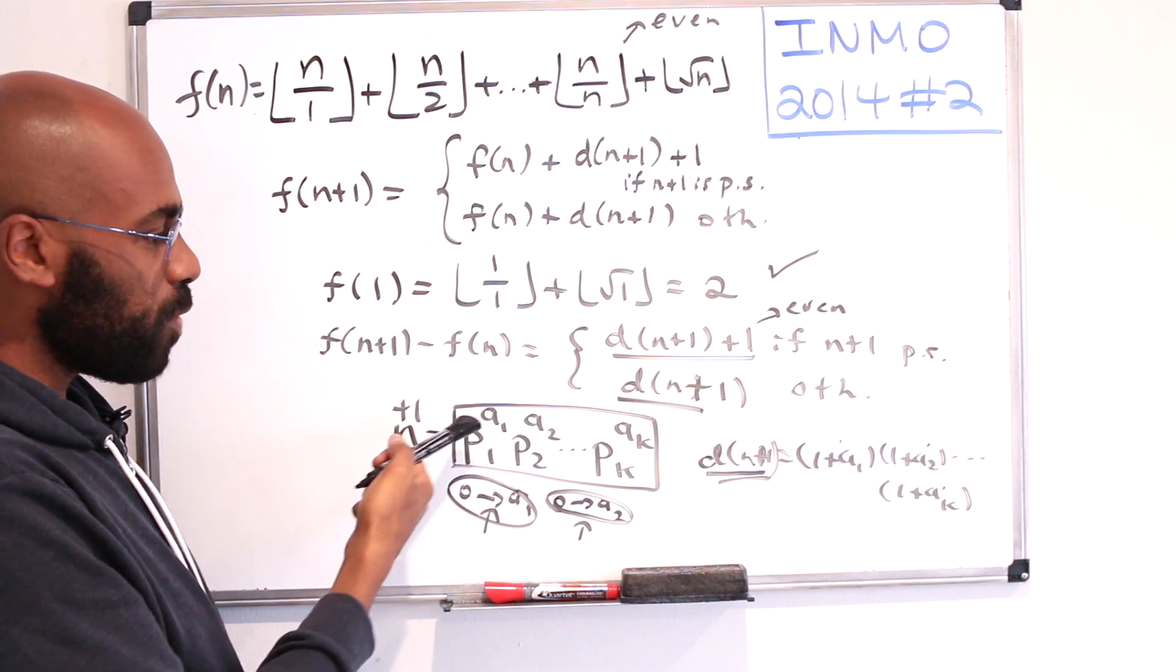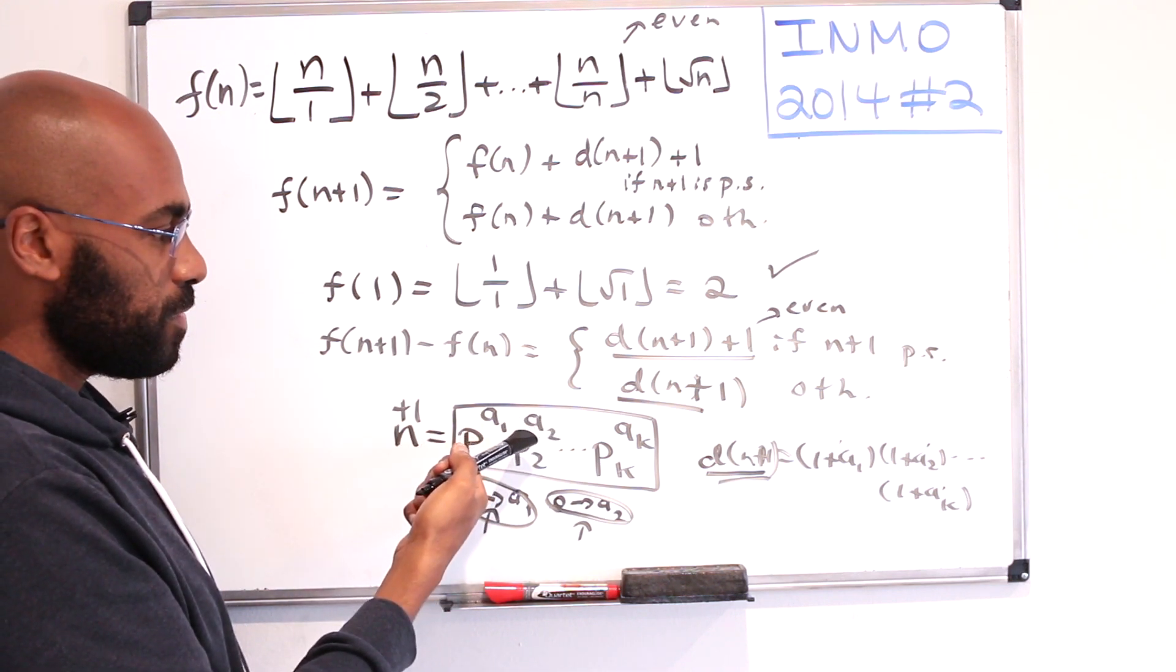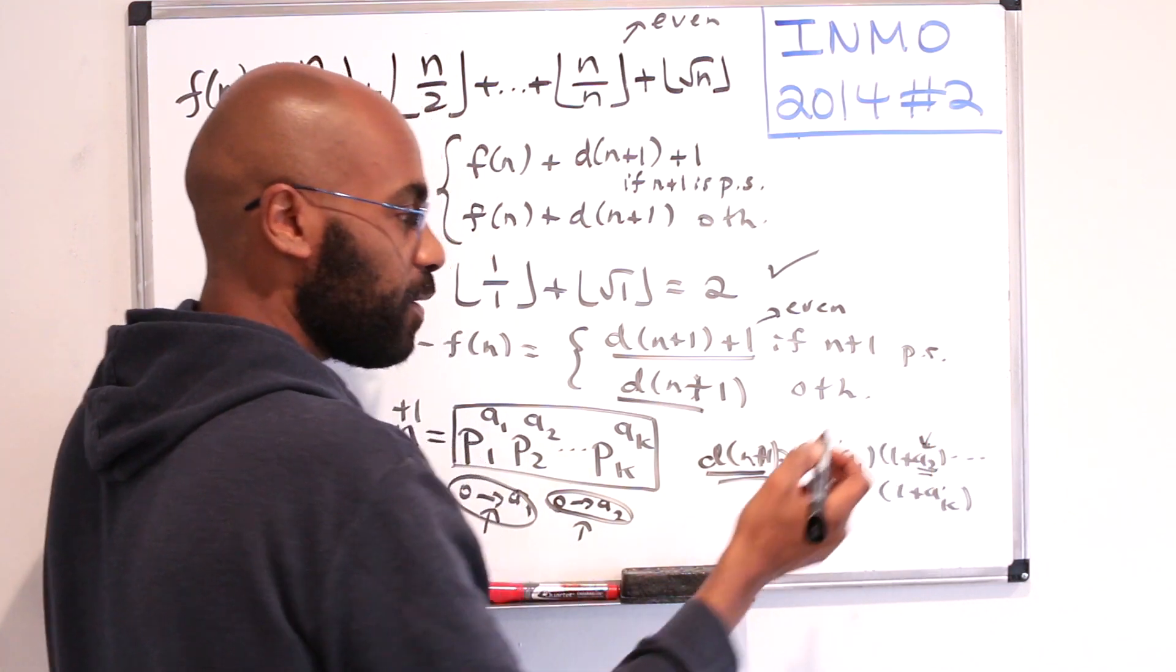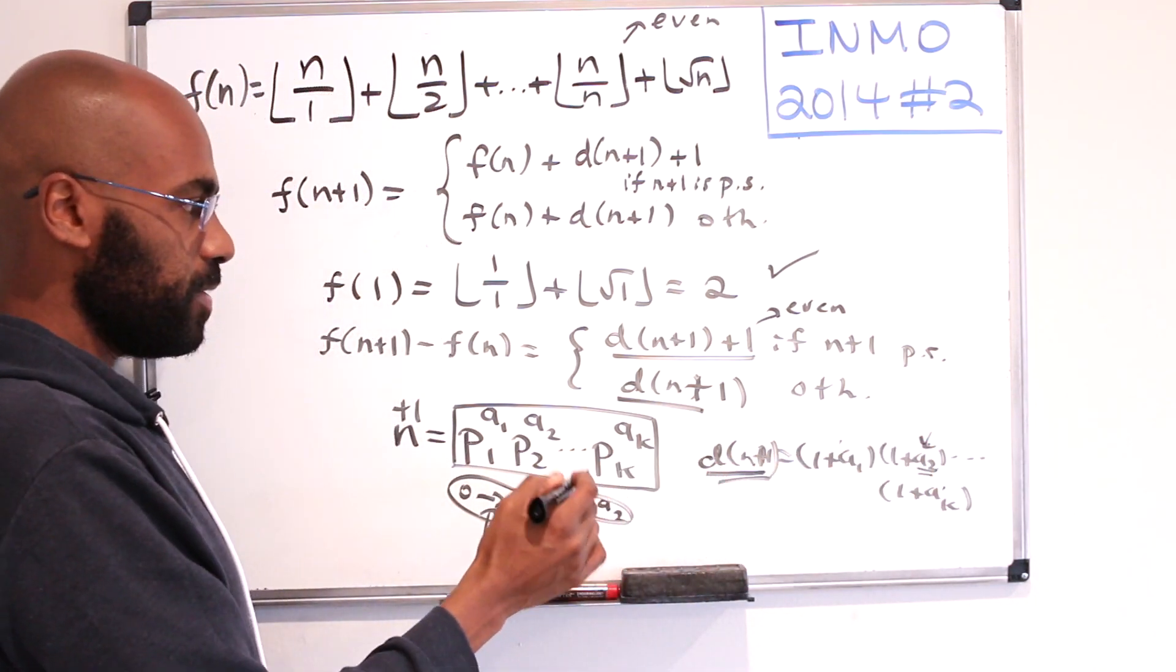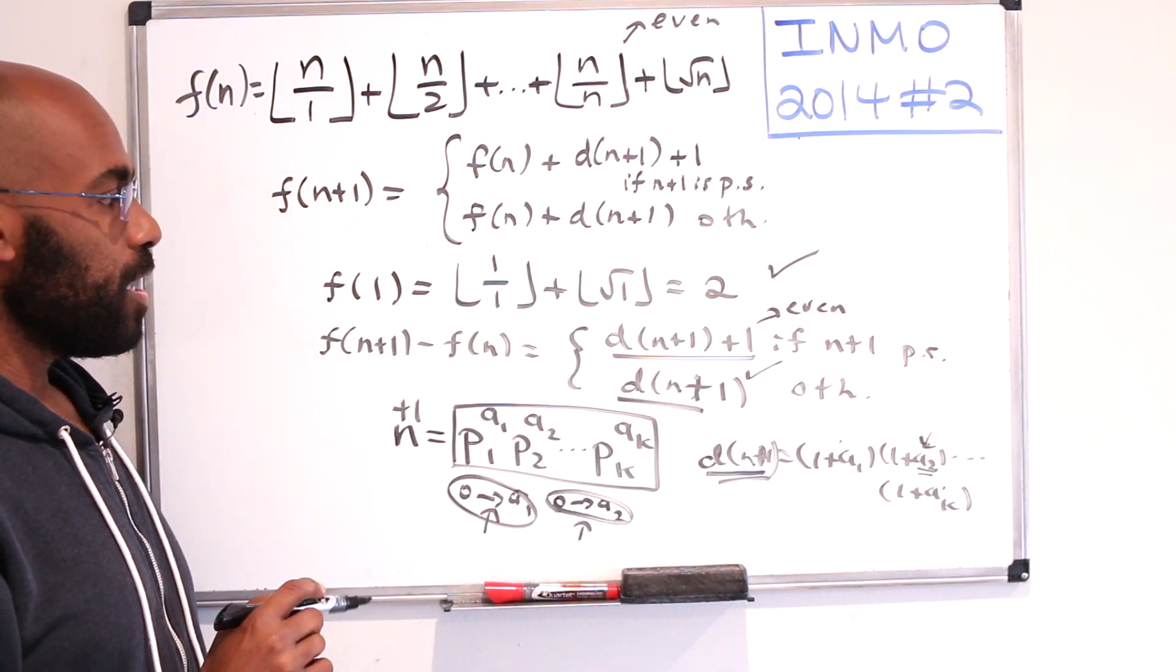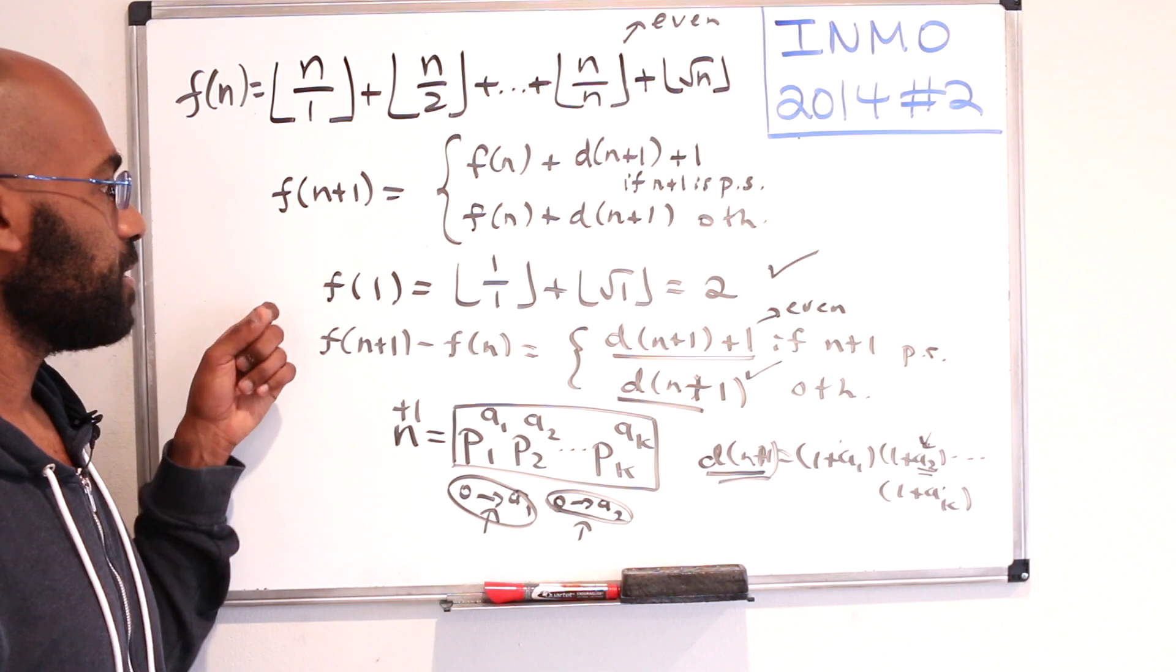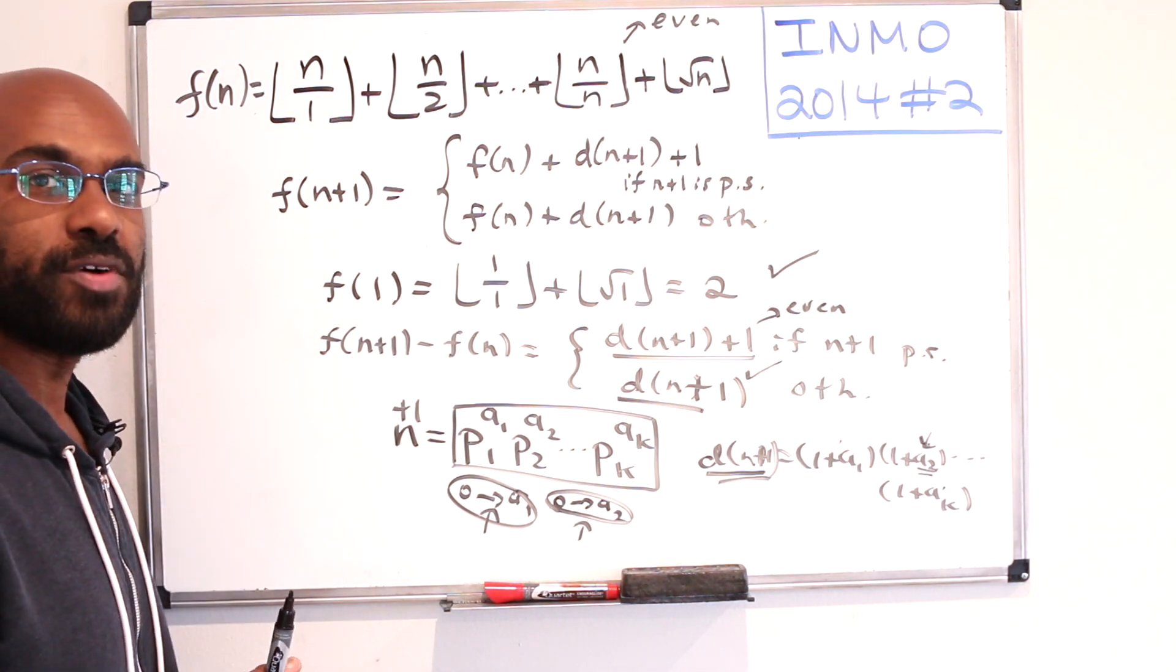Now if this is not a perfect square then one of these exponents has to be an odd number. Wherever it lies here we're going to have its representation somewhere where this thing is odd and then we add 1 we get an even number so the product of all of these things will be even. So in this case we also have that this thing is even here. And so no matter what this difference is going to be an even number and so by our cascading effect because f(1) is even itself we get that f(n) is even regardless of what n is.